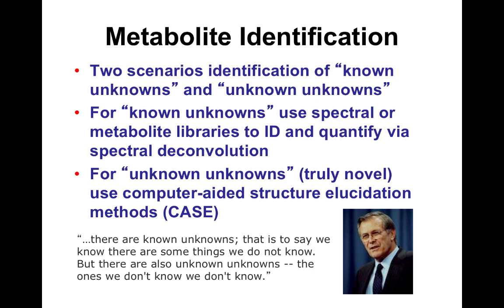In untargeted metabolomics or LC-MS, the unknown unknowns represent 98–99% of the peaks you're seeing — those that don't match to masses or values in HMDB, PubChem, or anything else. To deal with these, you have to use a completely different technique called computer-aided structure elucidation, or CASE. We won't go into that, but it can take months or years to determine the structure of a truly unknown unknown.